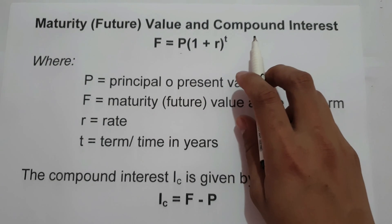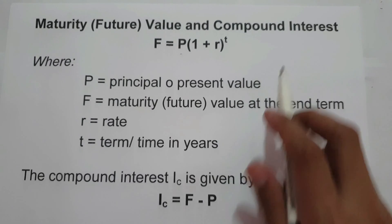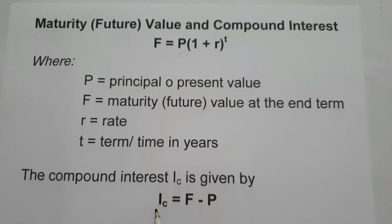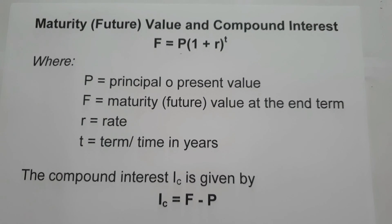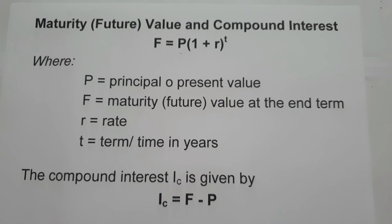And the formula in finding the compound interest is: compound interest equals future value minus principal. So these are the formulas that we need to remember in order for us to find the maturity value and compound interest compounded annually. So let's start and let's have an example.